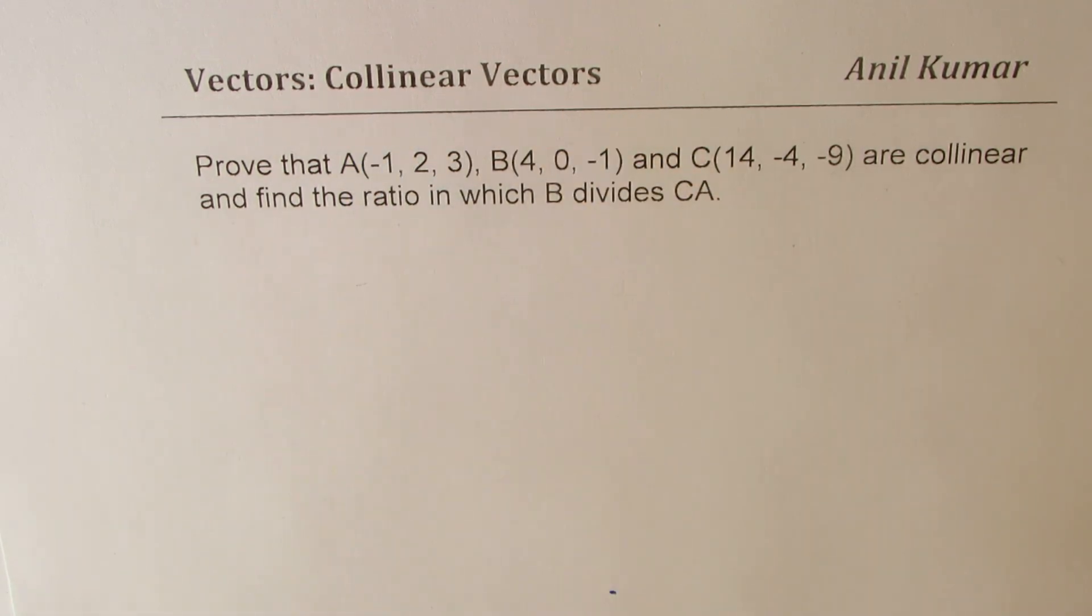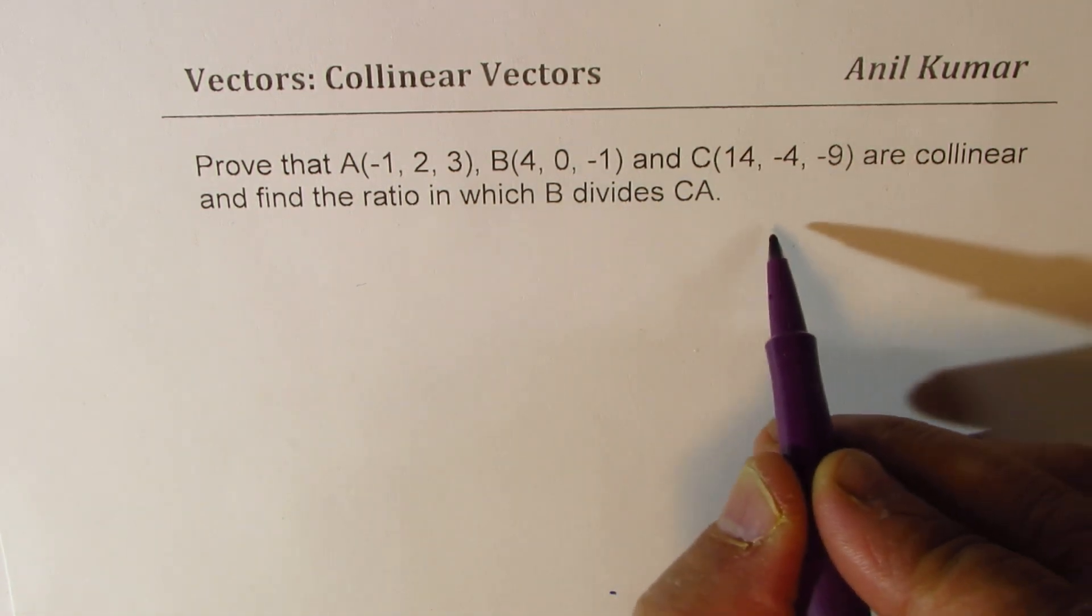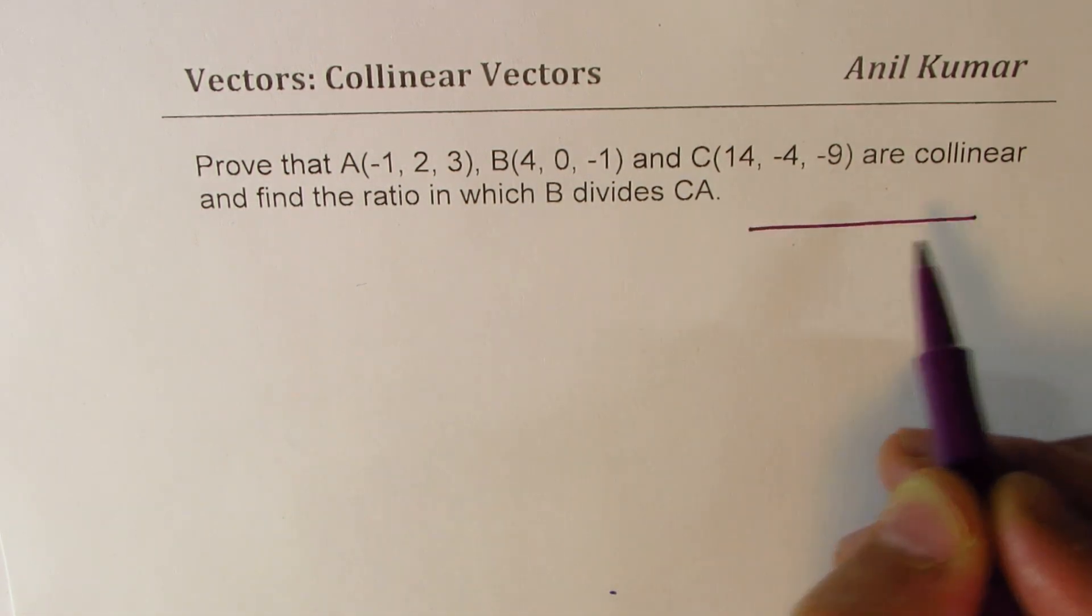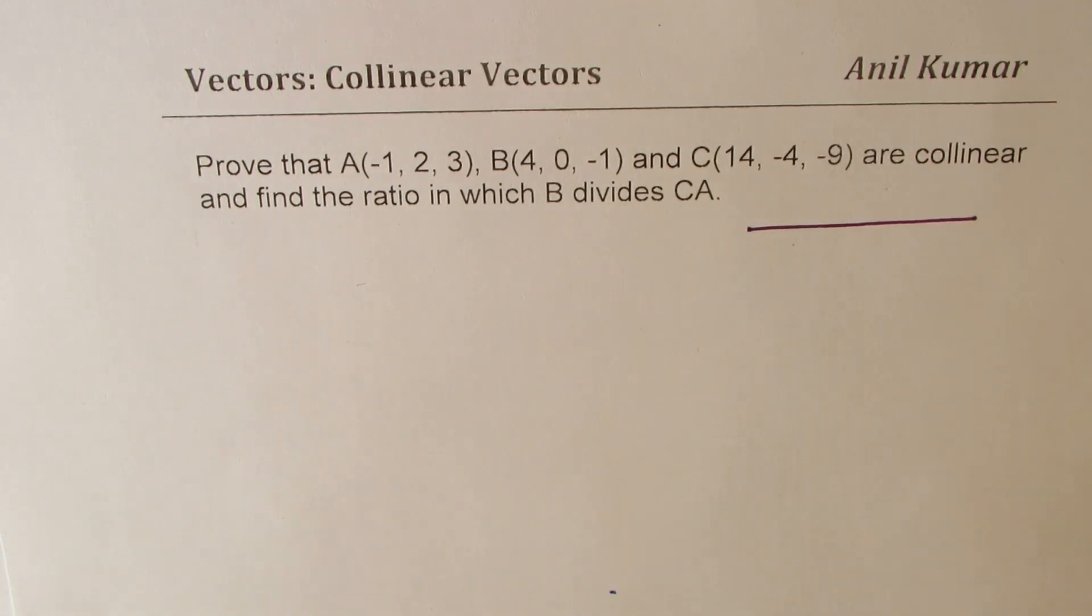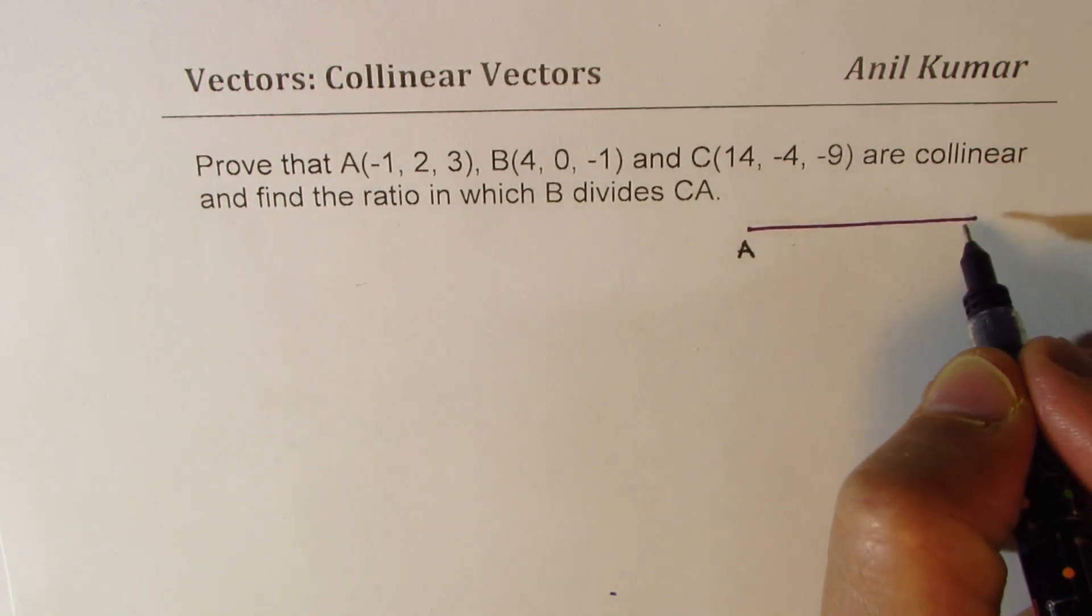So collinear means they are along the same line with a common point. So basically, we need to show that A, B and C are along the same line.